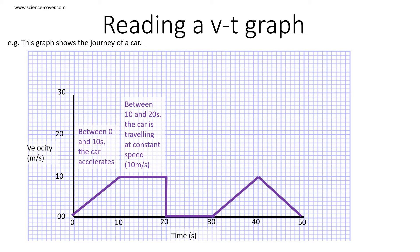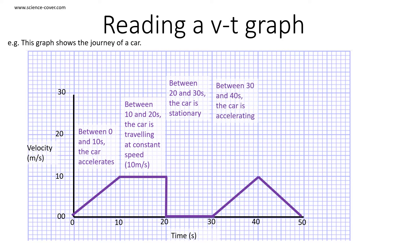Between 10 and 20 seconds, we have a horizontal line. This tells us that the velocity is not changing, so the car is moving at constant speed. We can also tell that that speed is 10 meters per second. Between 20 and 30 seconds, the car is stationary because the velocity is zero. Between 30 and 40 seconds, the car is accelerating — we can see the velocity increasing. And between 40 and 50 seconds, we can see the velocity decreasing, which means the car is decelerating.